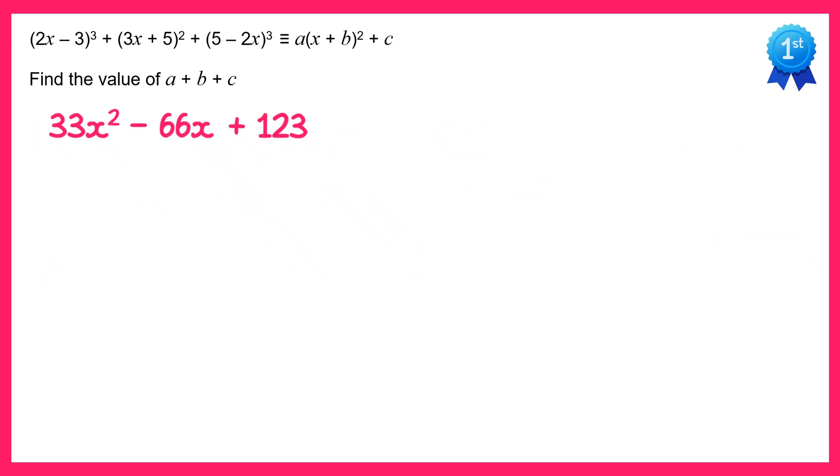Now if we look at the right hand side of this identity, it's in the completed square form, so we're going to complete the square now. To do this I'm going to factorize 33 from the first two terms, so I get 33 and then inside this bracket would be x squared minus 2x, and then of course we've got this plus 123 at the end.